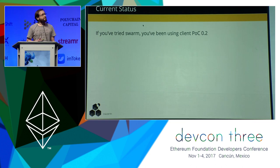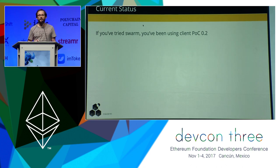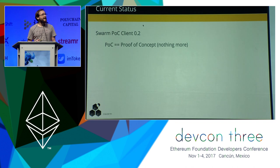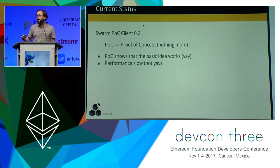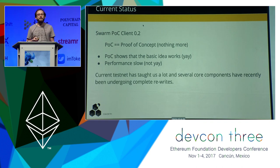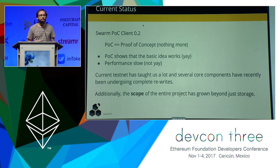As for status: some of you might have tried Swarm already with our release POC 0.2. That really is a proof of concept release — it's not a final release. The proof of concept showed us that the basic idea works, but the performance has been really slow, and we've had data availability problems throughout the network. As a proof of concept it was successful, and the testnet has taught us a lot. As a result, several core components are being rewritten or have been completely rewritten.